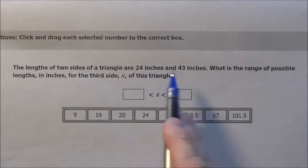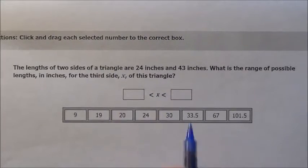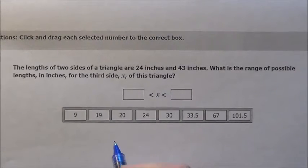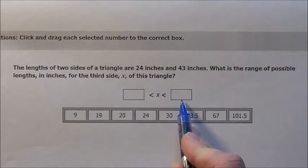So they give us these two measurements and it's a click and drag where you're going to pick these numbers up and move them to the boxes. If you remember here, you have two options. You basically are going to subtract them to get the smallest and add the two numbers to get the largest.